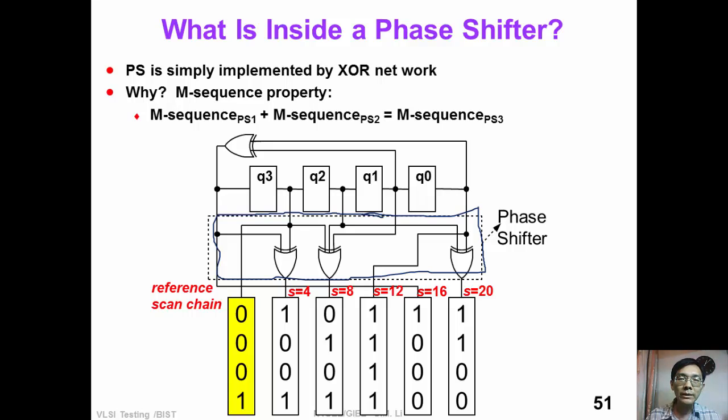So what's the reason? If you still remember, one m-sequence property is that the summation of two m-sequences is actually the same m-sequence, but with different phase shift. Please note that the addition here is actually a mod-2 addition, which is an exclusive-or.